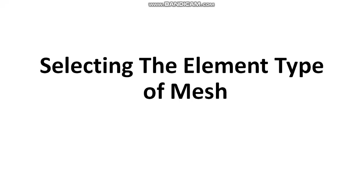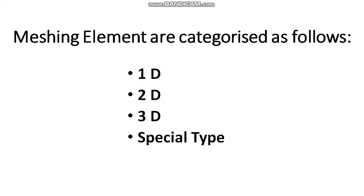While meshing a CAD model, you have to be careful about the type of mesh element you select. Primarily, elements are classified as one-dimensional, two-dimensional, three-dimensional, and special type. Now we discuss why we need all types of elements and their significance.